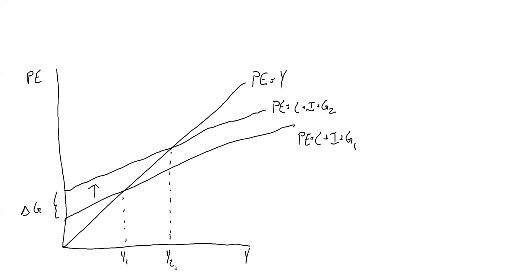So we're going to move to Y2. You'll notice that the change in Y — the difference between Y1 and Y2 — is greater than the change in G. Total spending went up by more than just government spending. That's because government spending raised income, which raised consumption. With higher consumption we have higher spending and therefore higher income — government spending fed on itself and increased total income.